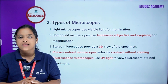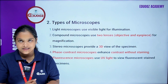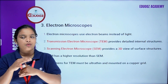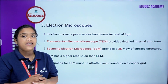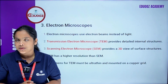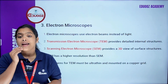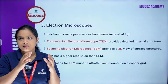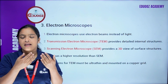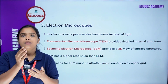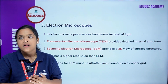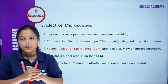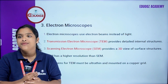The fluorescent microscope is used to view fluorescent-stained specimens. The electron microscope uses an electron beam instead of light. The transmission electron microscope (TEM) provides detailed internal structure. The scanning electron microscope (SEM) provides a 3D view of surface structure.